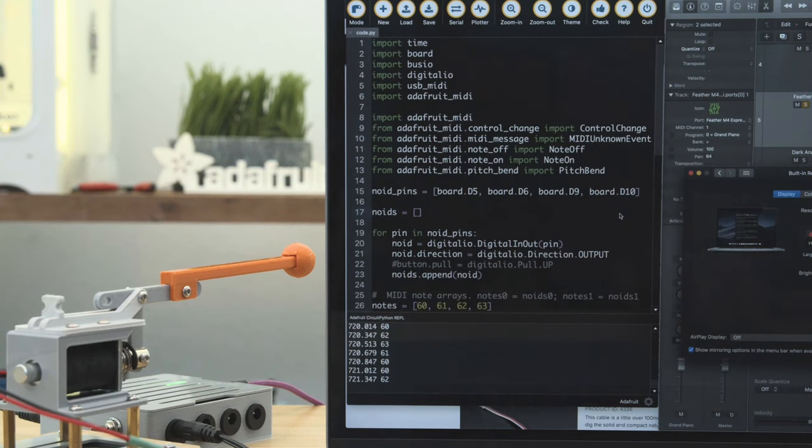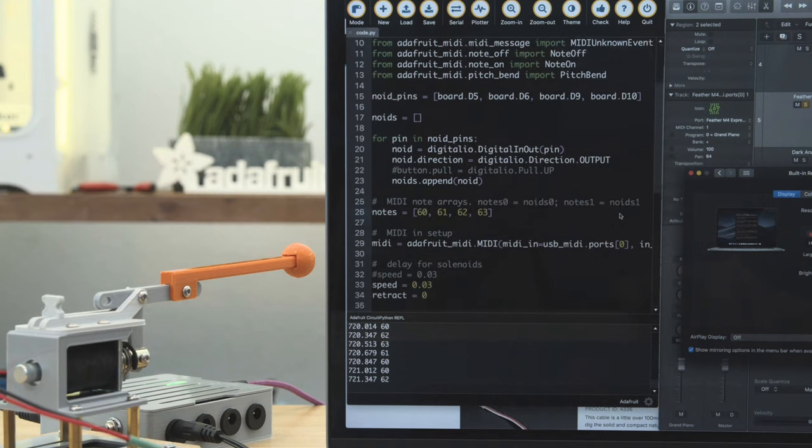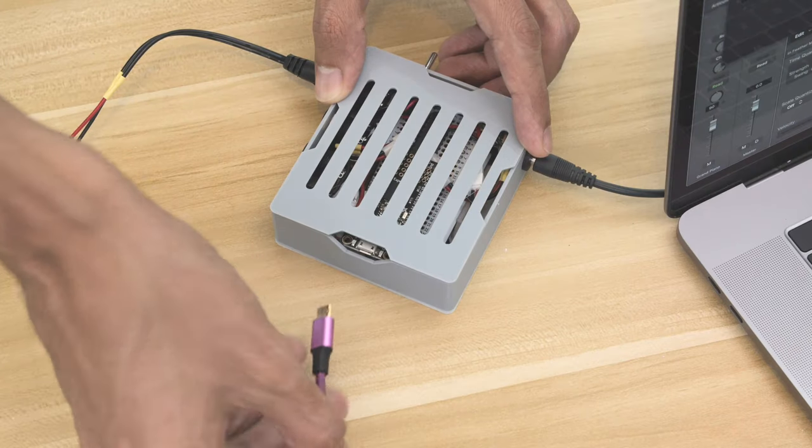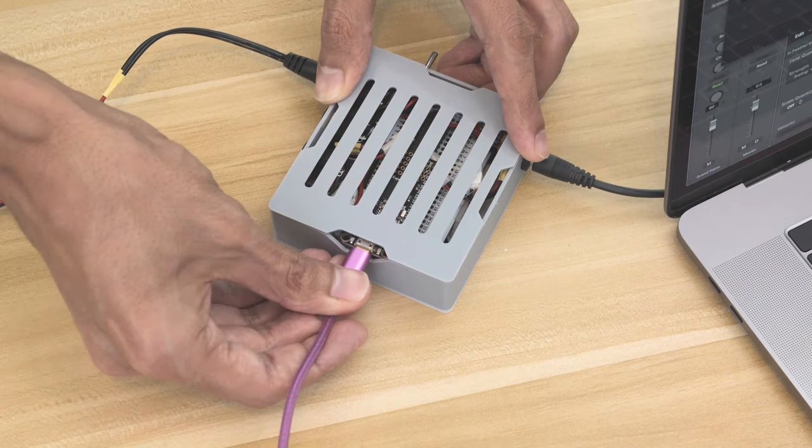Digital pins are set up as outputs so MIDI notes can be sent to trigger the solenoids. The Feather shows up as a native USB MIDI device when it's connected to a desktop.